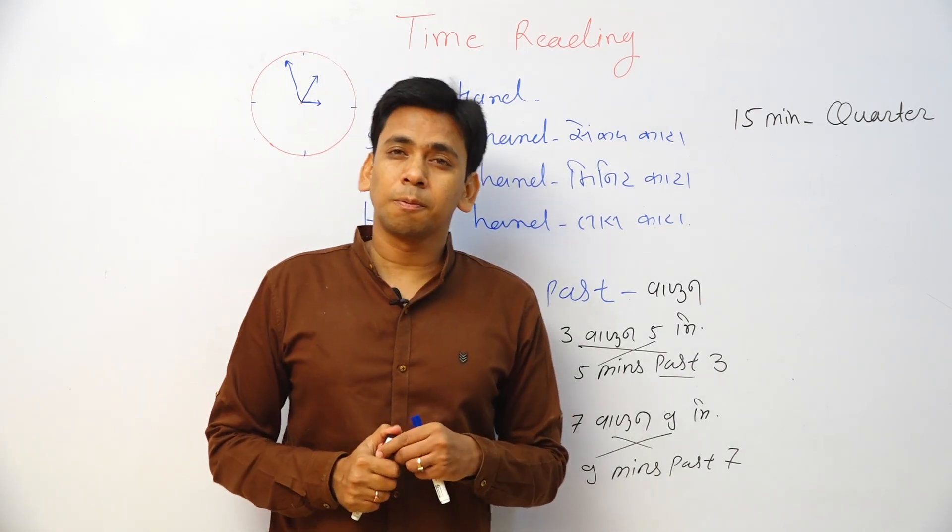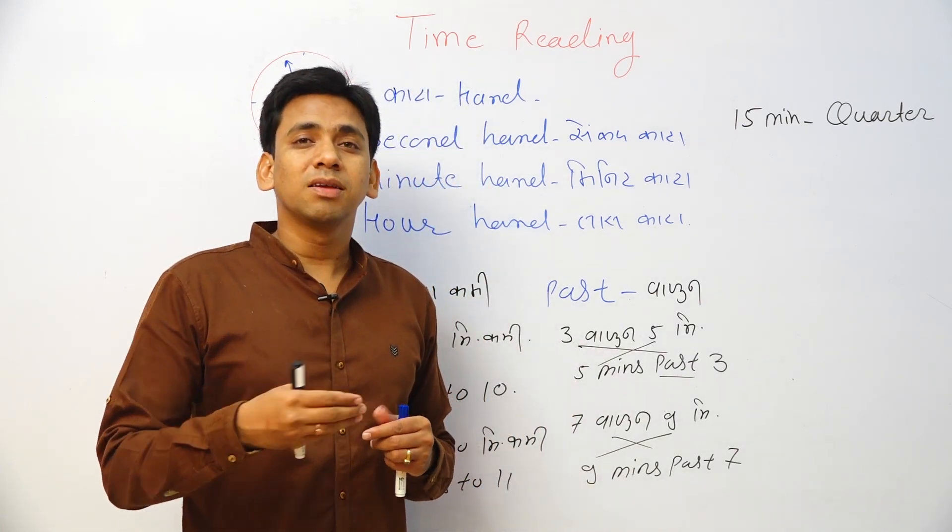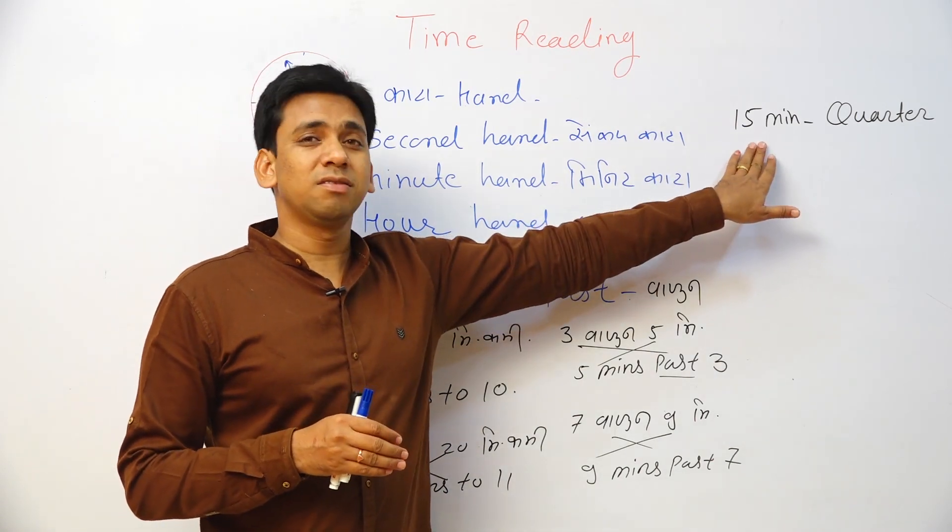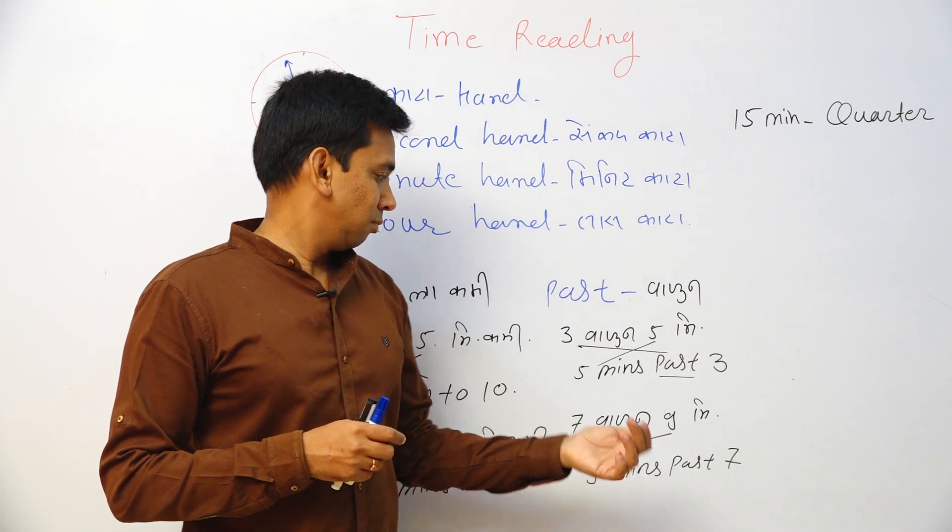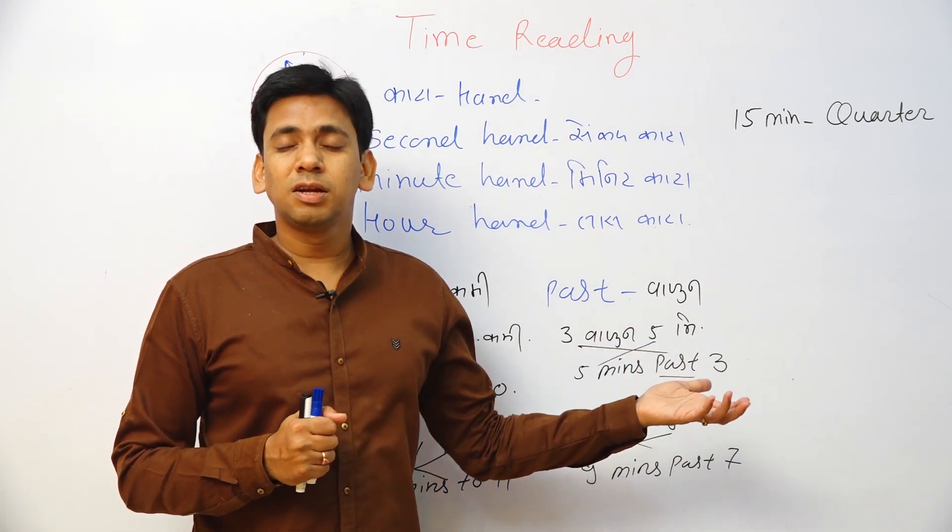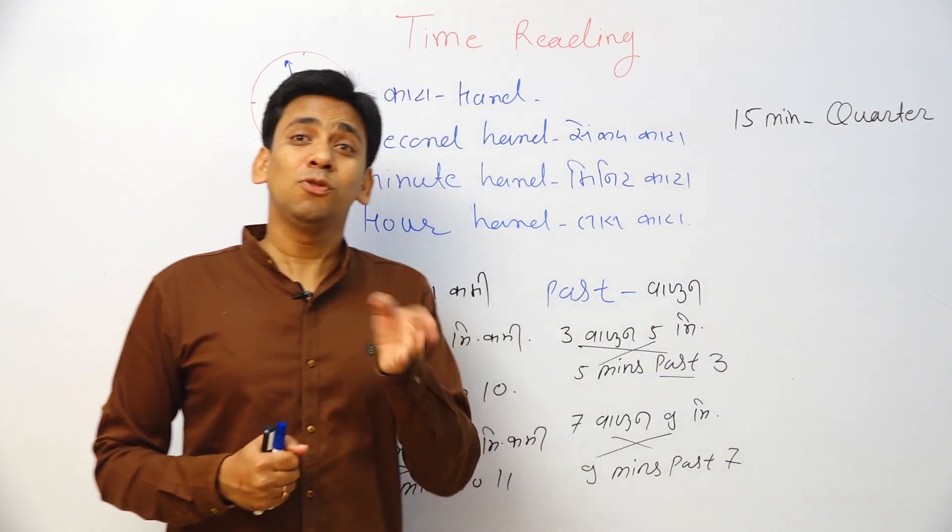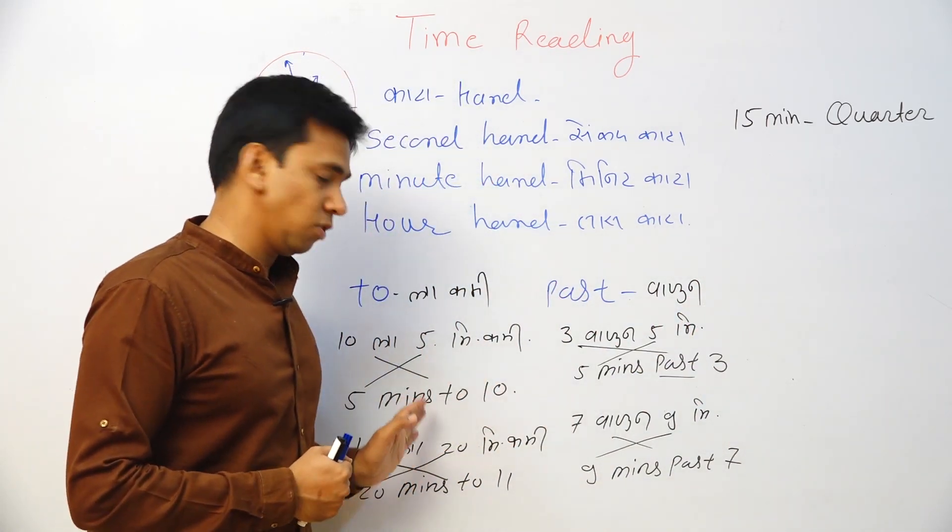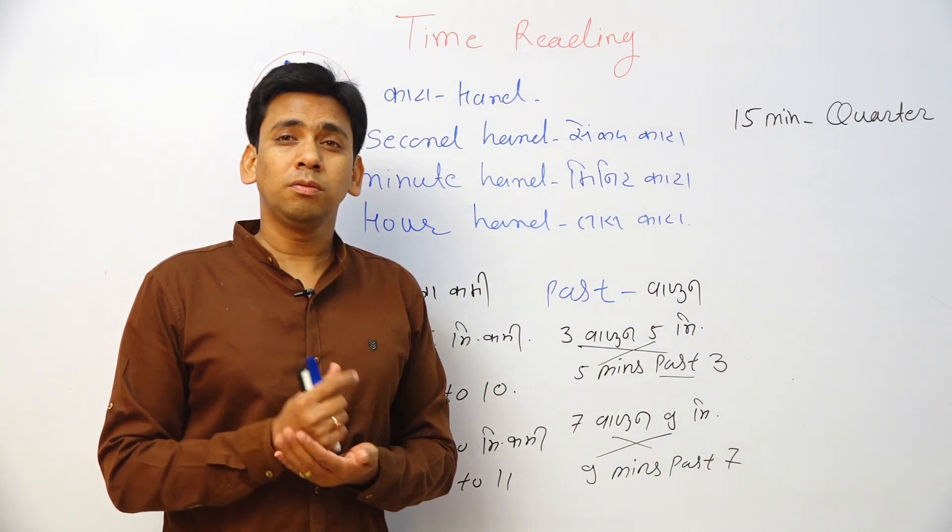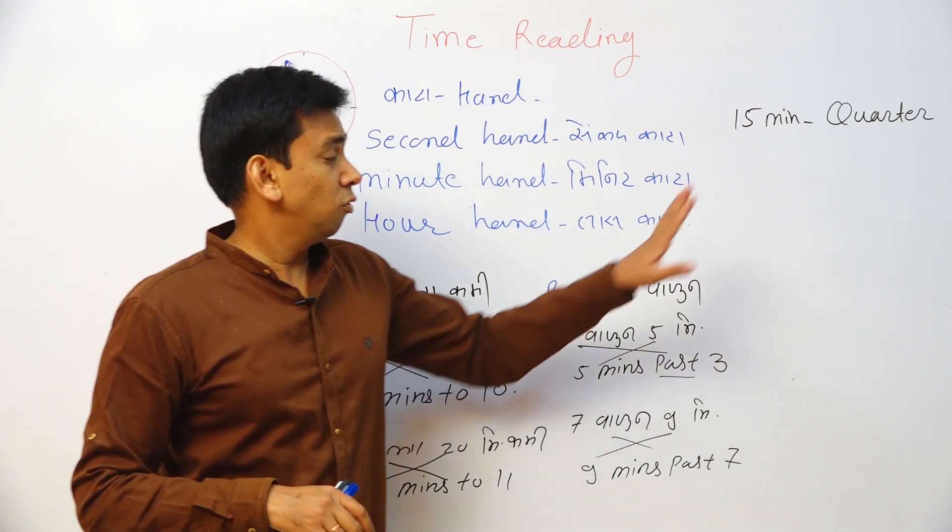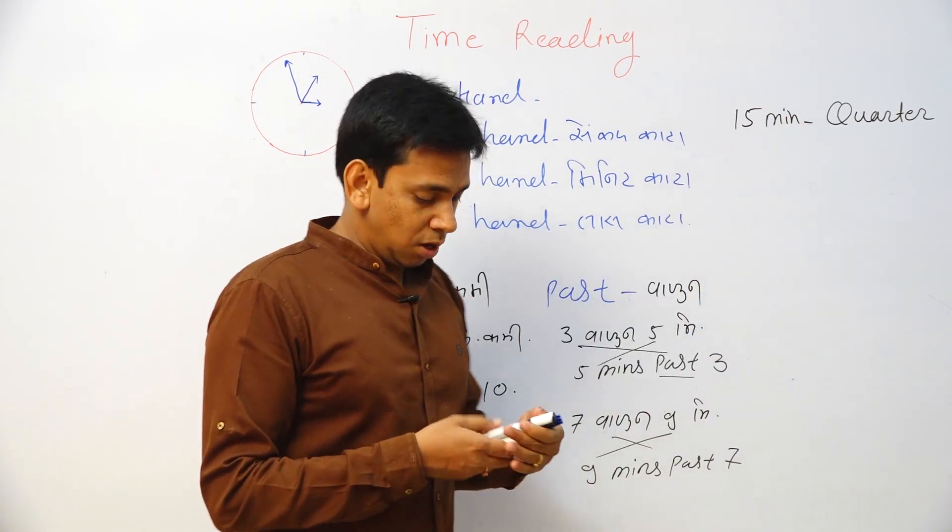Now I want to say quarter past 3. How can I say? Instead of saying fifteen minutes, say quarter past three. That is called quarter past three. Another one is quarter to 2. Instead of fifteen minutes, what we can say? Quarter to two. This is called quarter. Clear?